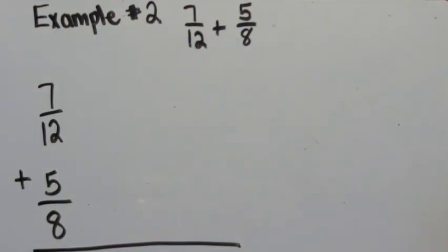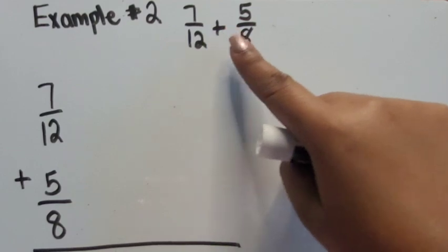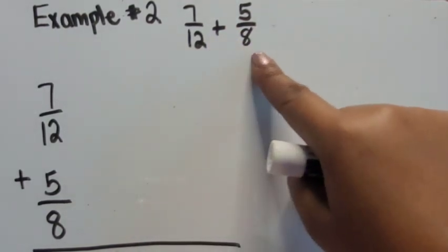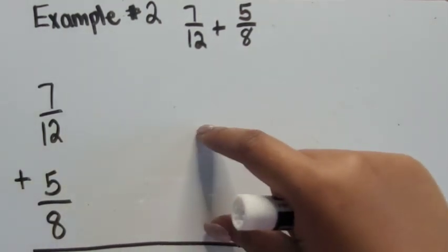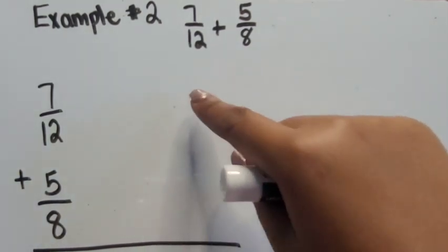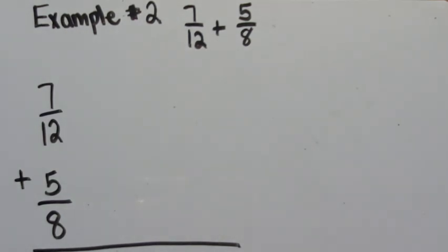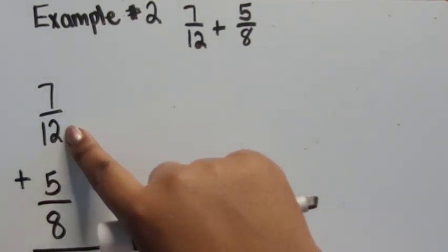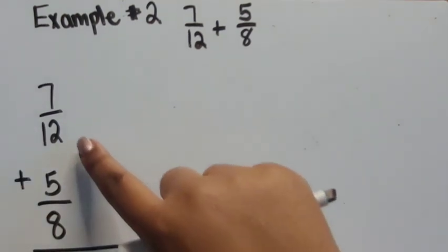With example number two, we're going to be adding seven-twelfths plus five-eighths. Our denominators are different again, so we need to find equivalent fractions that give us a common denominator. We're going to use common multiples to find that common denominator.